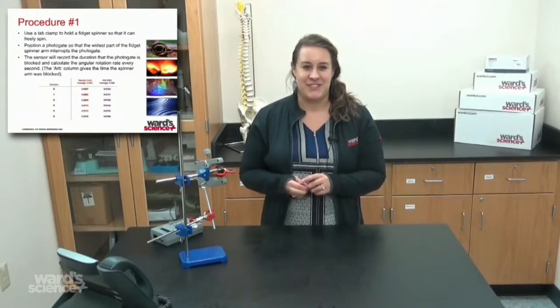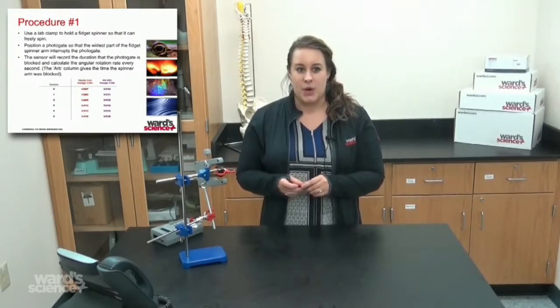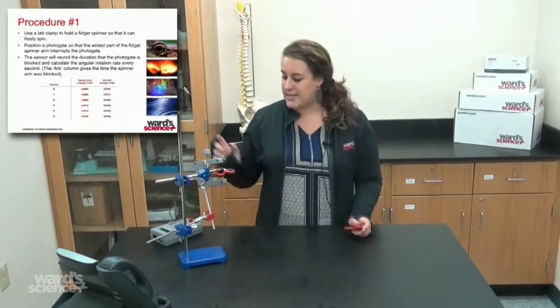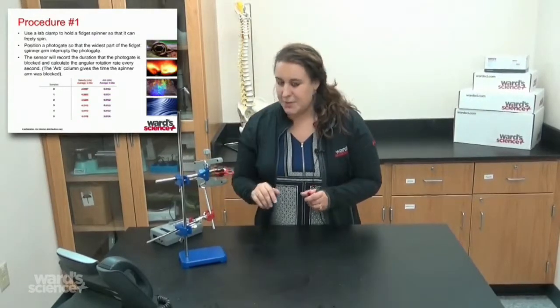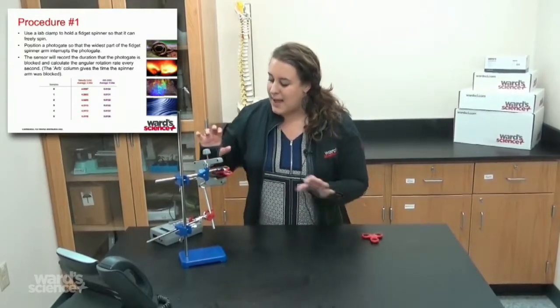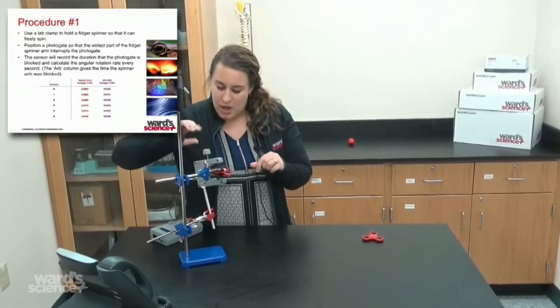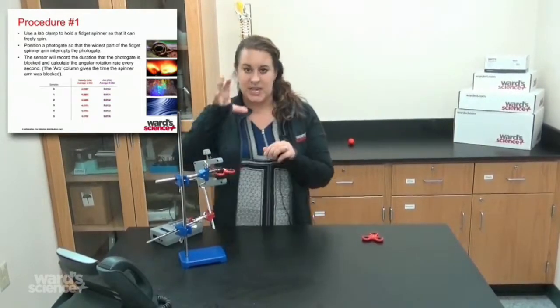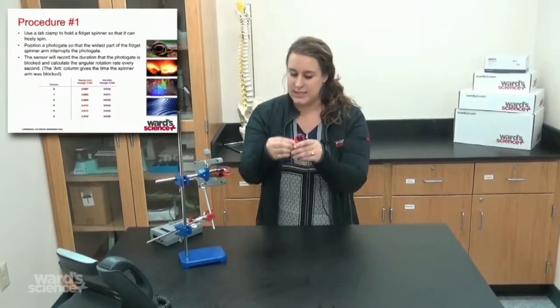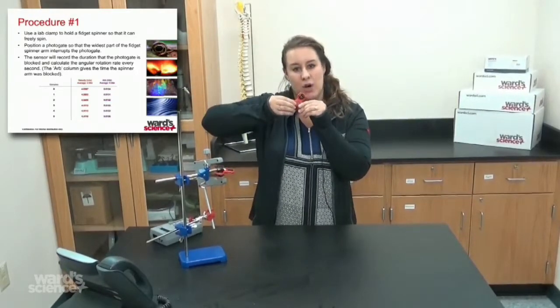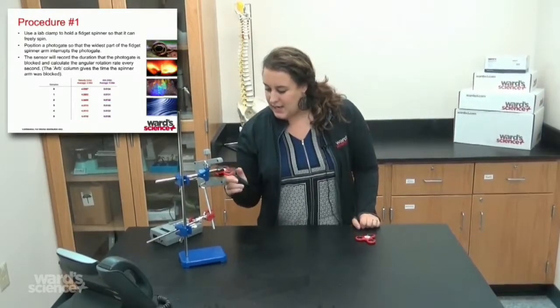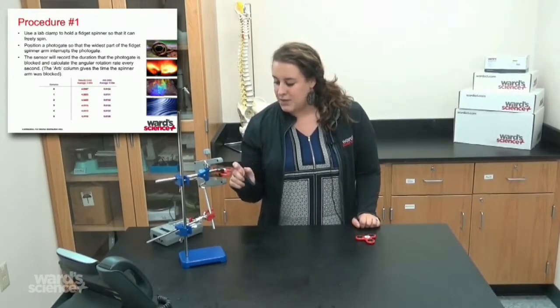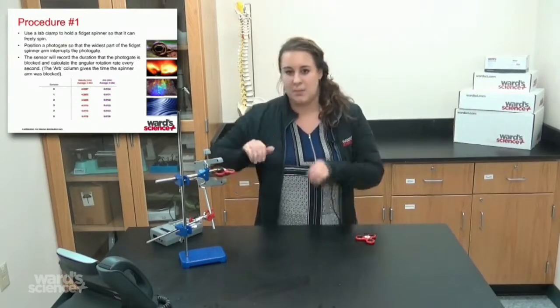Procedure number one for high school: We're going to be using a lab clamp to hold the fidget spinner so that it can freely spin. This took me a little bit to kind of master here. When you set this up at home, the clamp isn't dead center of the middle—it's kind of slightly outward because that is the perfect spot where it rotates freely.